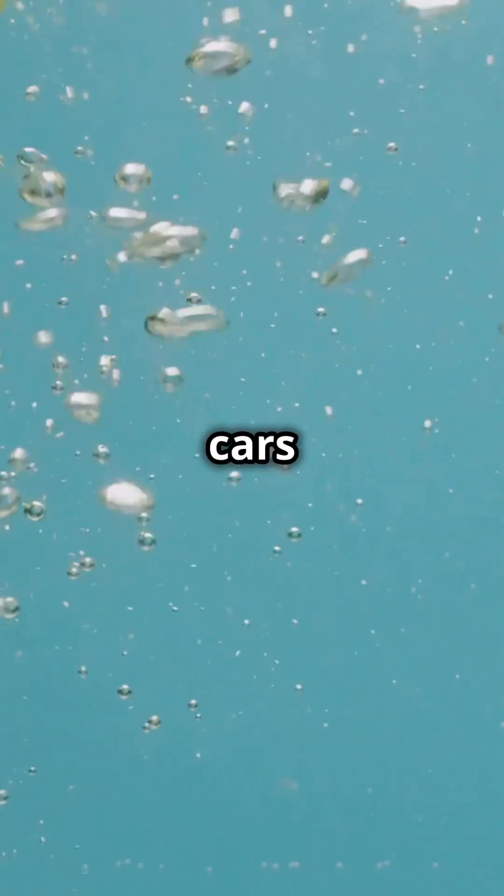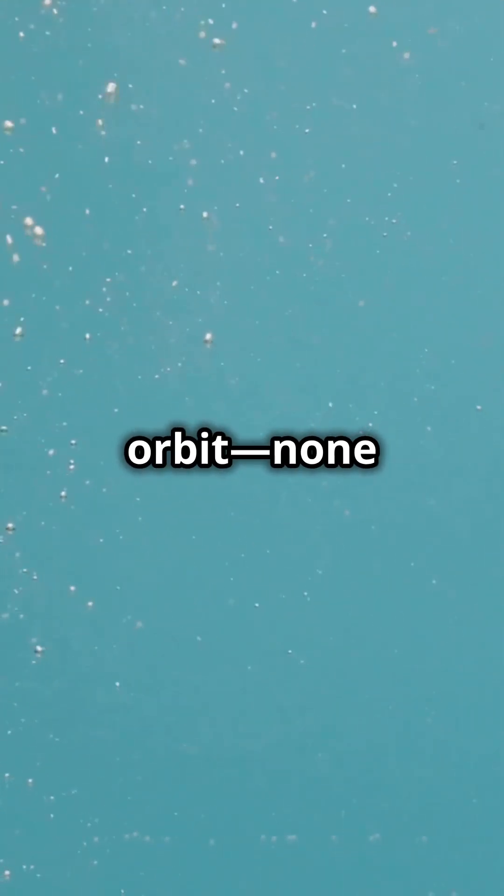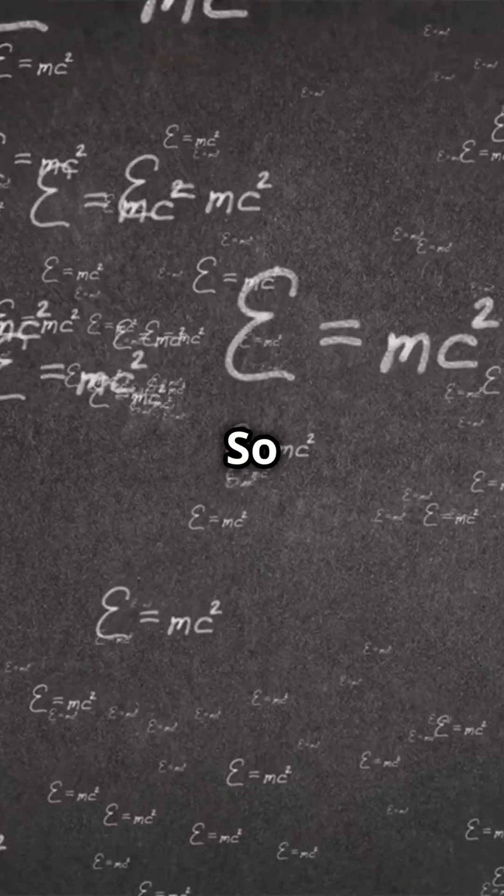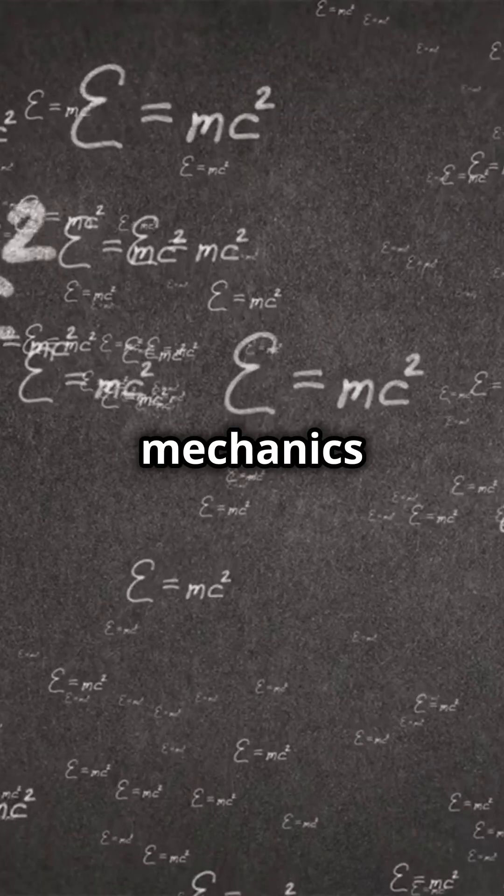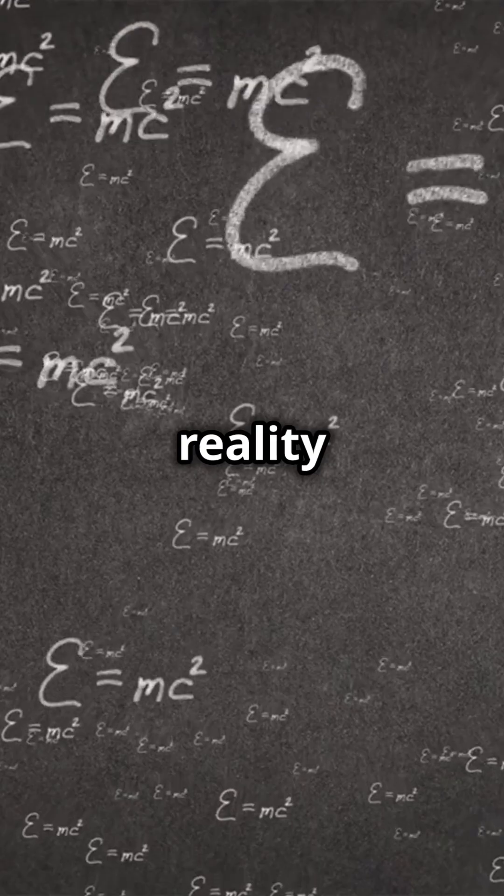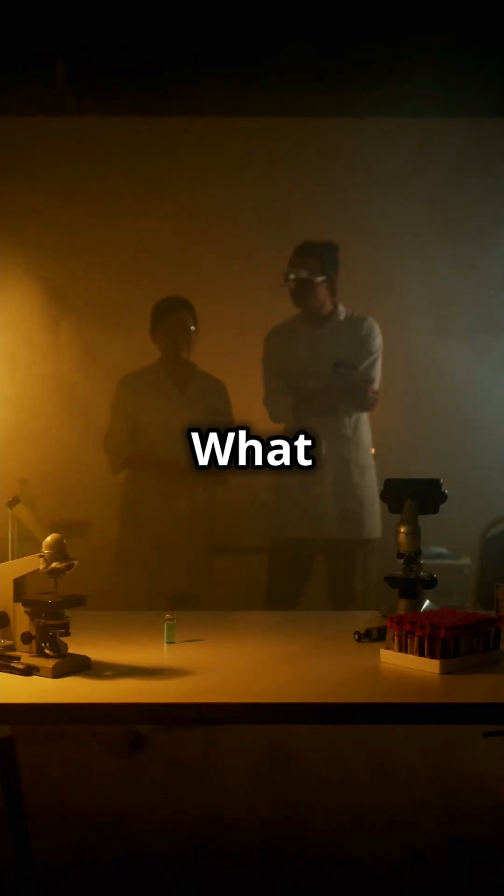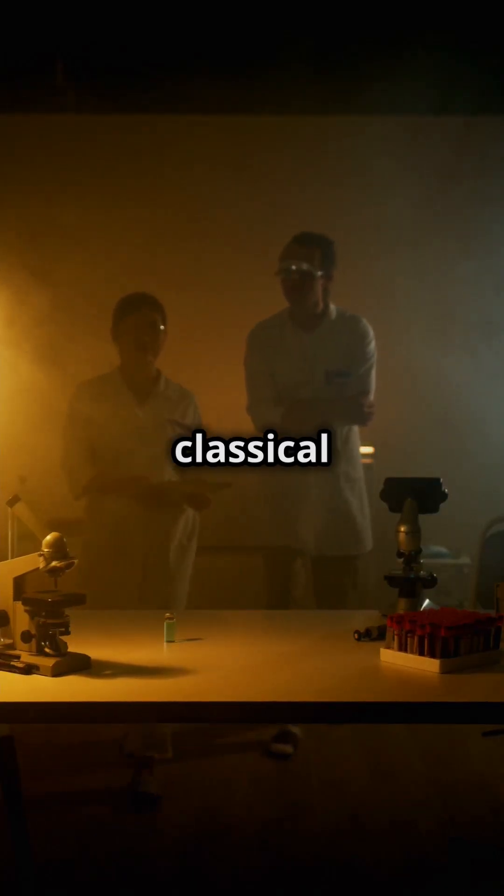But in our everyday world, where apples fall, cars drive, and planets orbit, none of that happens. So here's the question. How does the bizarre, probabilistic world of quantum mechanics give rise to the solid, predictable reality we experience? What is the missing piece between the quantum and classical worlds?